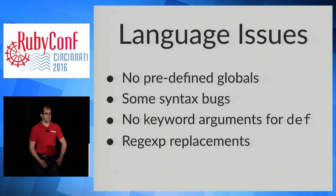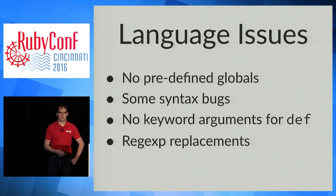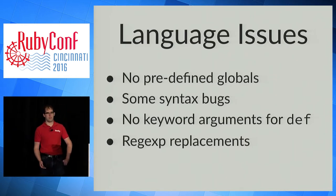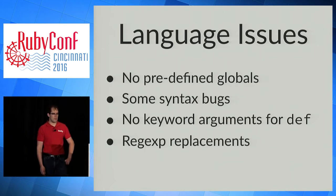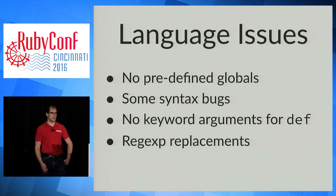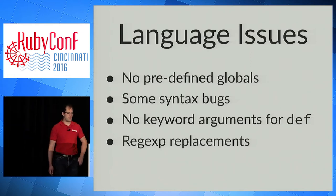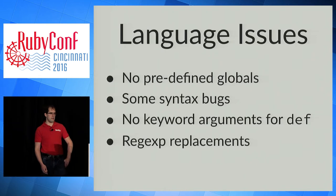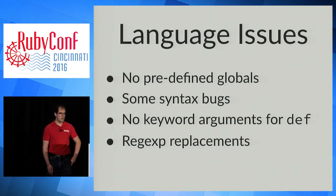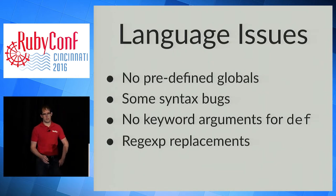MRuby is also a smaller language outside the standard library. There are no predefined globals such as load paths, since everything is compiled in, nor any globals inherited from Perl or shell scripts, so libraries you want to port from CRuby may depend on these and you'll have to work around them. I also had a problem with heredoc support when porting a library from CRuby. While you can use keyword arguments to call methods, you can't define methods that automatically check keyword arguments like you can in CRuby. Some gsub replacements don't work in MRuby either, so you may need to change your regular expressions.